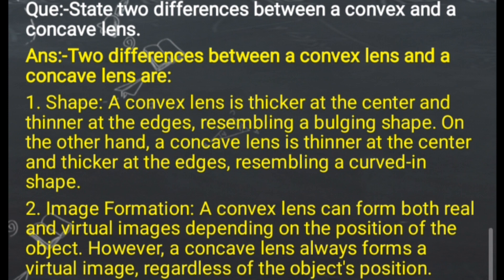First, we discussed shape — you just need to explain the shape of concave and convex lens, and you can also show it diagrammatically. The second difference is image formation. The convex lens can form both real and virtual images. But the concave lens always forms a virtual image, no matter where you place the object. The image is always virtual and erect.